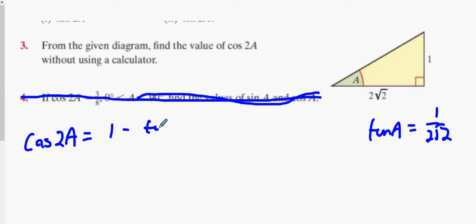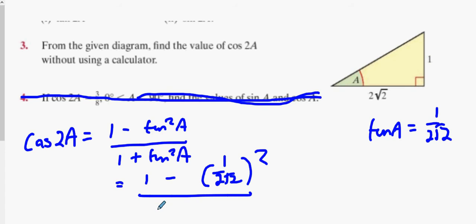1 minus tan squared A. So maybe do 1 minus (1 over 2 root 2) squared and then on the bottom it's 1 plus (1 over 2 root 2) squared. I think it's 7 over 8 divided by 9 over 8 which is 7 over 9. I did that in my head, I'm hoping it's 7 over 9.